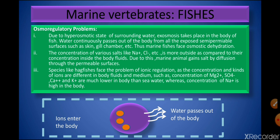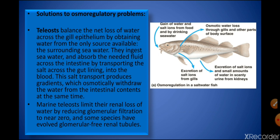A third problem is ionic regulation, faced by species like hagfishes. Certain ions such as magnesium, sulphate, calcium, and potassium are at much lower concentrations in the body than in sea water, whereas sodium concentration is higher in the body than in sea water.